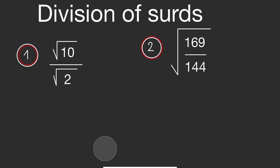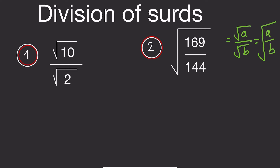Let's look at this equation. If we want to apply this rule, let me write the rule here: the square root of A over B is also the same as the square root of A divided by the square root of B. So that can be applied here.